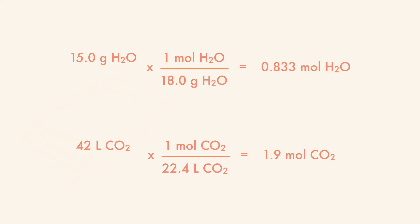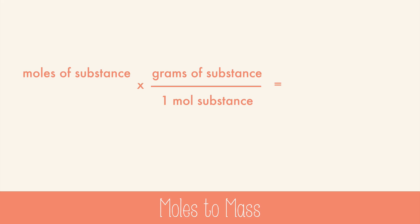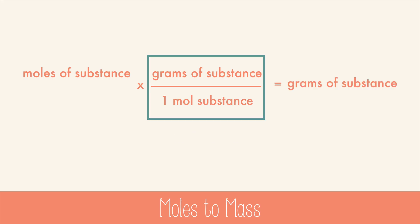Let's look into how to make these calculations. To go from moles to mass, you need to use the molar mass as a conversion factor. Put one mole on the bottom and the grams from the periodic table on top. This causes the units of moles to cancel and it leaves you with grams.